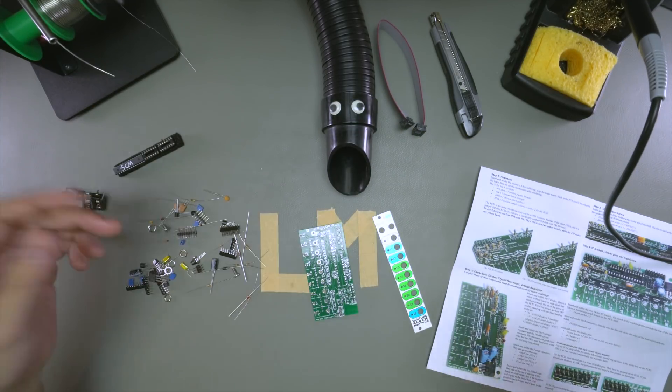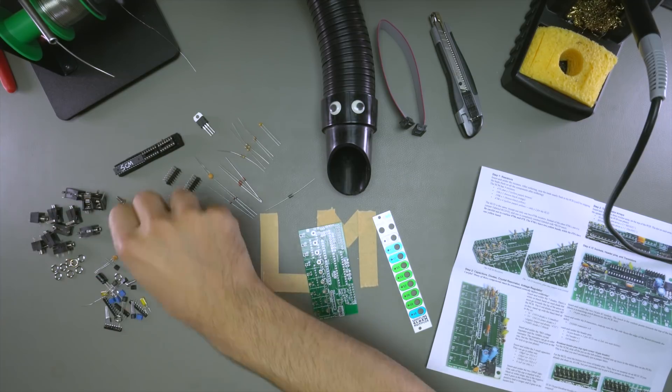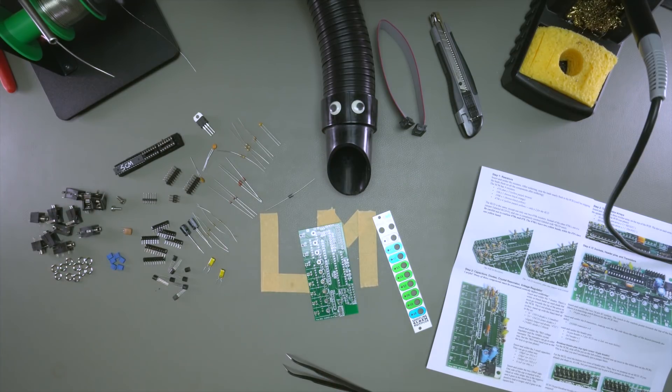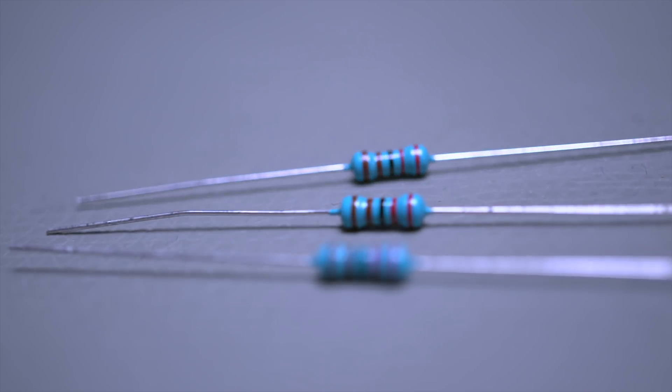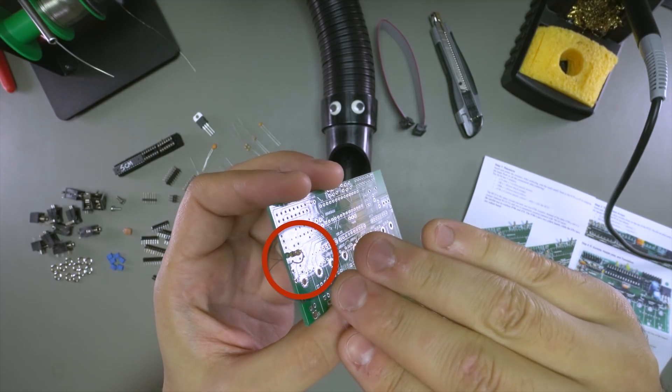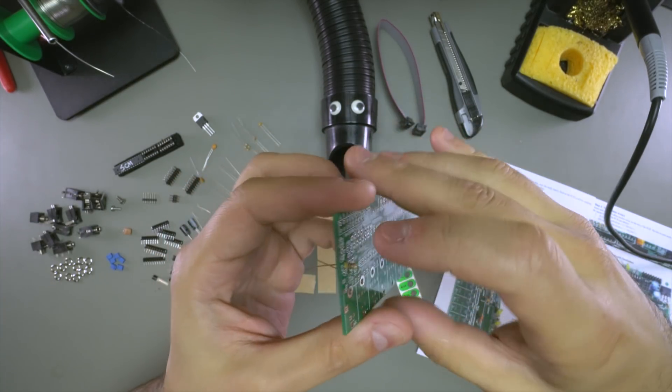Alright, so organization here is key. If you want to have a successful build, count out your parts, make sure everything you're supposed to have is there and then get started. Okay, now these are resistors and it doesn't matter which way you plug them in. These are not polarized parts, which means you can put them in this way, you can put them in the other way and it really doesn't matter.